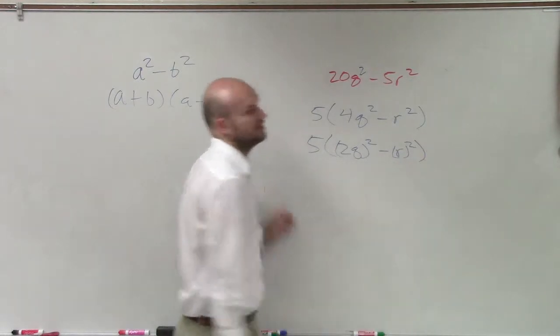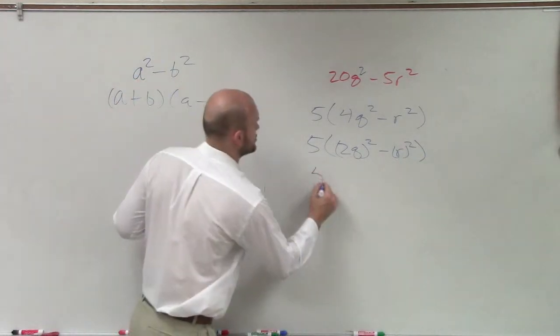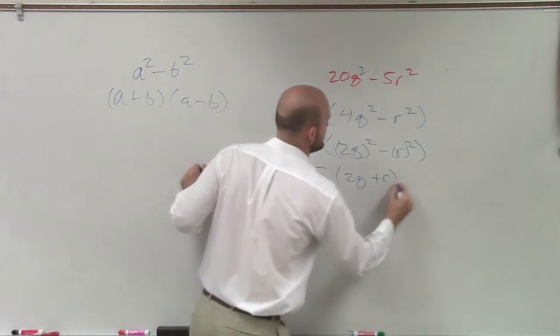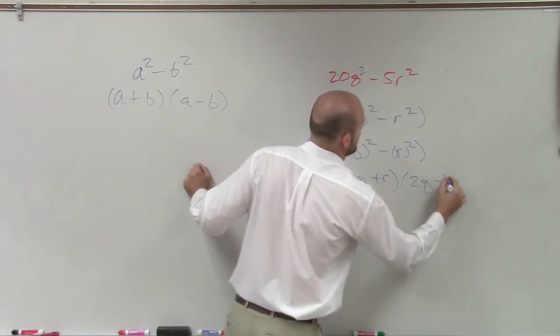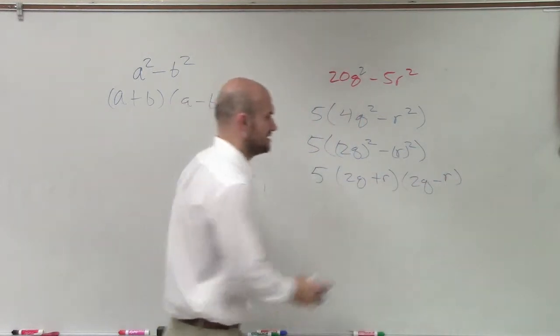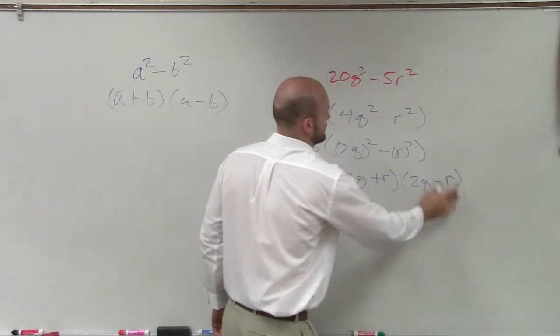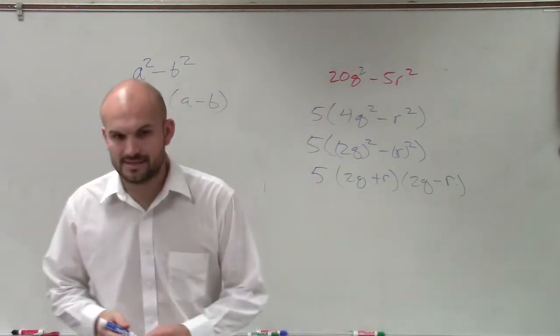Now, sorry, another extra parentheses. Now, I can just factor this. So it would be 5 times 2q plus r times 2q minus r. That's what we're doing. OK, that's it.